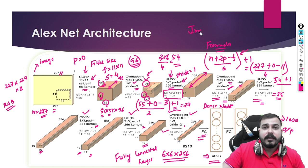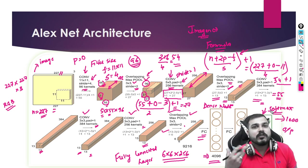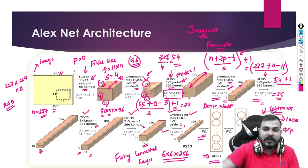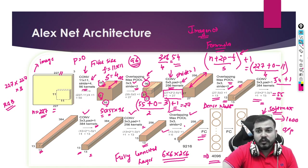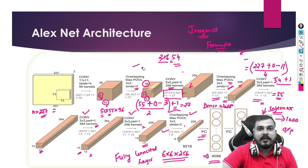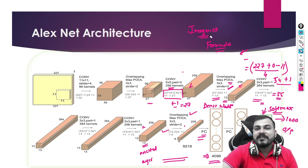Finally we pass everything to the output layer, which has 1,000 outputs because ImageNet has 1,000 categories. This 1,000-output layer uses the softmax function — because if you have two binary outputs you use sigmoid, but for more than two classes you use softmax. The formula to remember for convolutions is: (n + 2P − F) / stride + 1. If you remember that formula you'll be able to understand how each size is derived — which is key to understanding all other architectures.